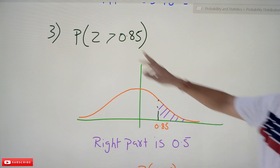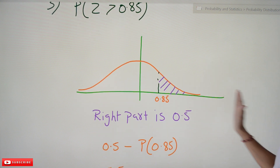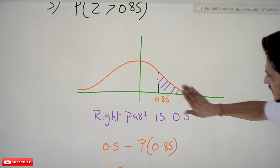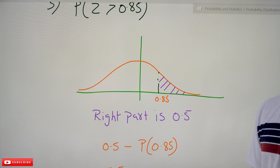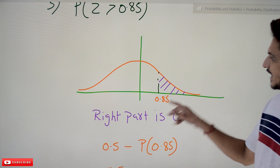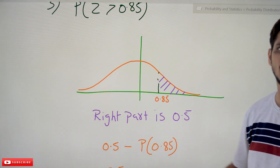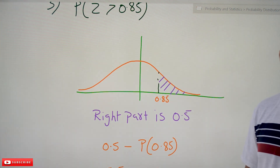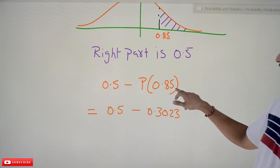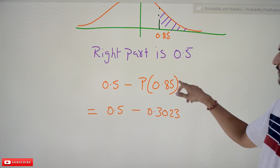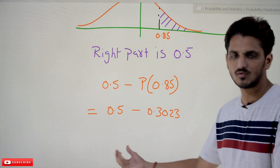For the probability of z > 0.85: we need the area to the right of 0.85. We know the total right-hand side area from the mean is 0.5. So we compute 0.5 minus P(0.85), where P(0.85) is the area from 0 to 0.85. From the table, P(0.85) = 0.3023. Therefore, 0.5 - 0.3023 gives the required probability.